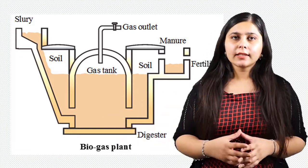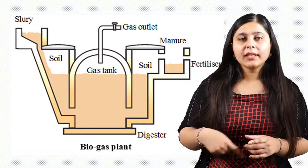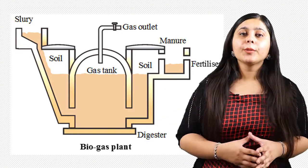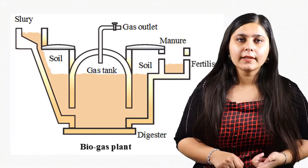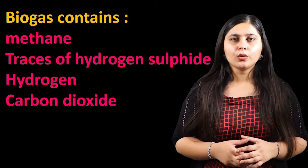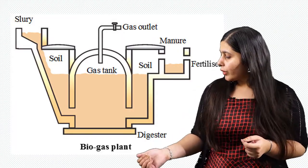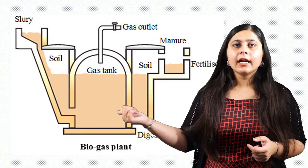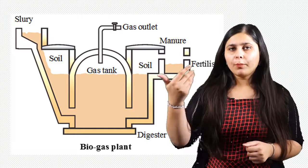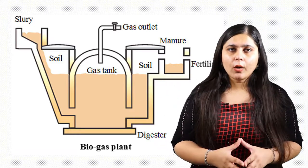In the inlet tank, slurry — that is cattle dung mixed with water — is filled. Through the inlet pipes it reaches the digester tank, where microorganisms are present. The microorganisms convert the complex substances into simpler substances by anaerobic respiration, that is in the absence of oxygen, and biogas is formed. Biogas contains methane, traces of hydrogen sulfide, H₂, and CO₂. Since gas is lighter, it rises up and gets collected in the dome-shaped gas lid over the digester tank.